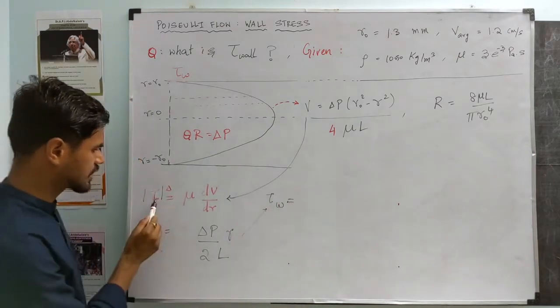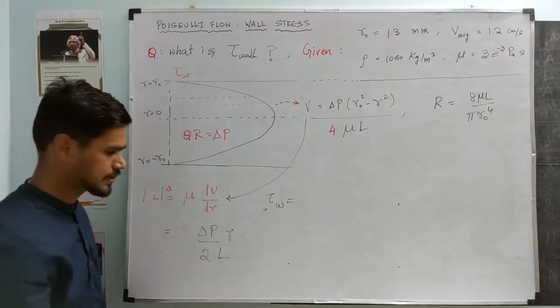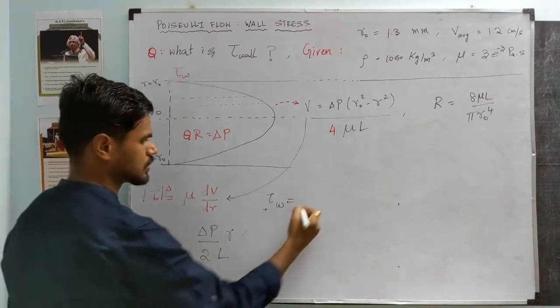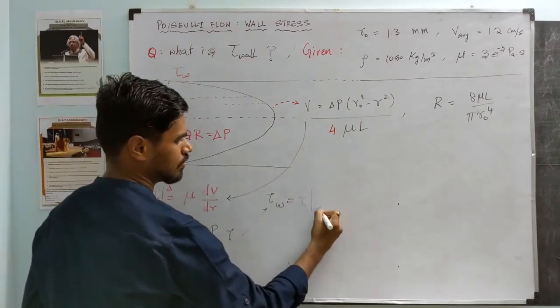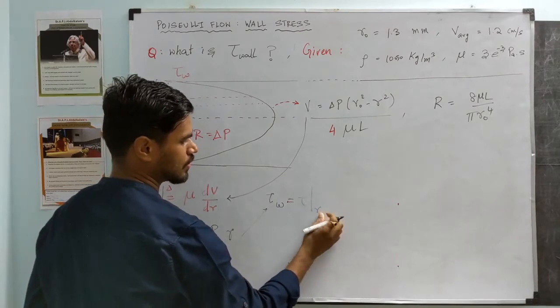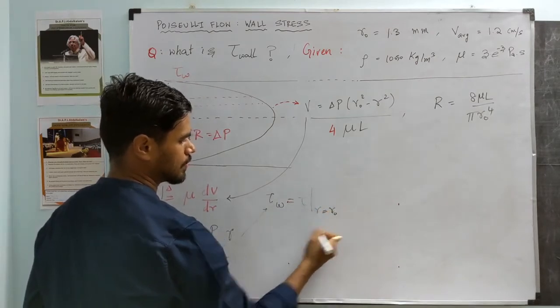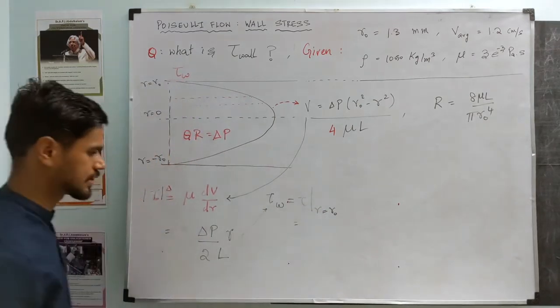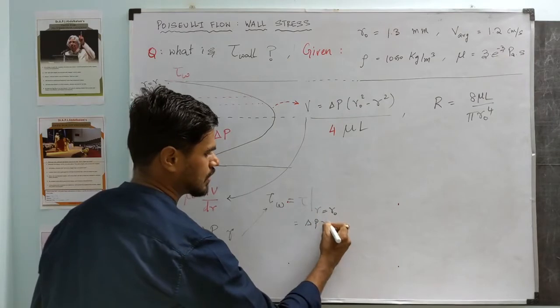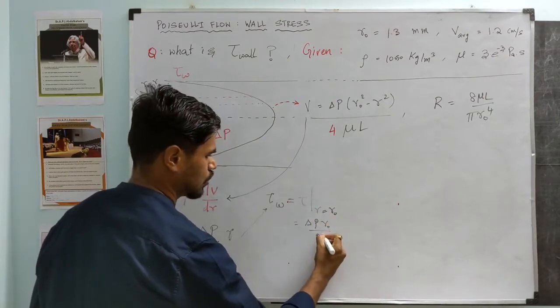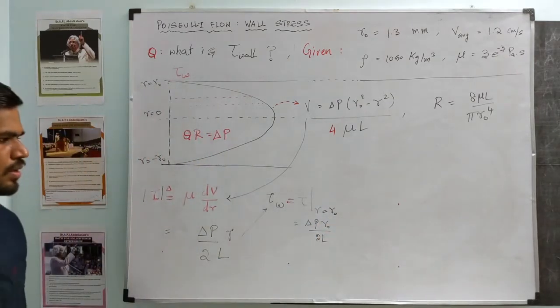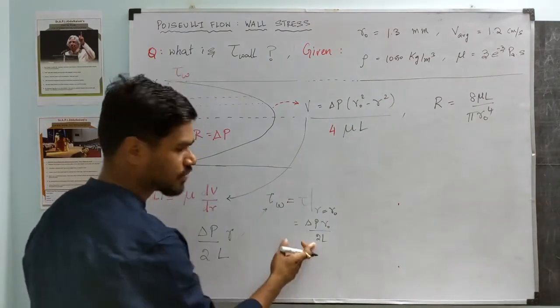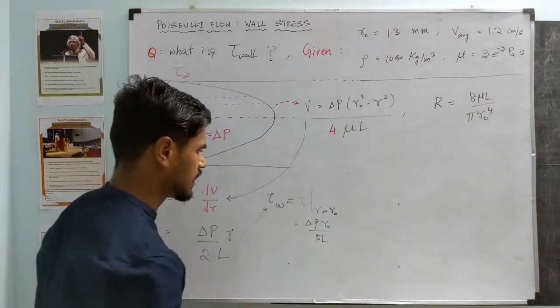So can we calculate what the wall shear stress is? We're still stuck. From here, the τ_wall is going to be - this is shear stress at any particular r. We want shear stress at the walls, right? So take τ and look at its value at r = r₀. That should give us the wall shear stress, of course, which is nothing but (Δp·r₀)/(2L).